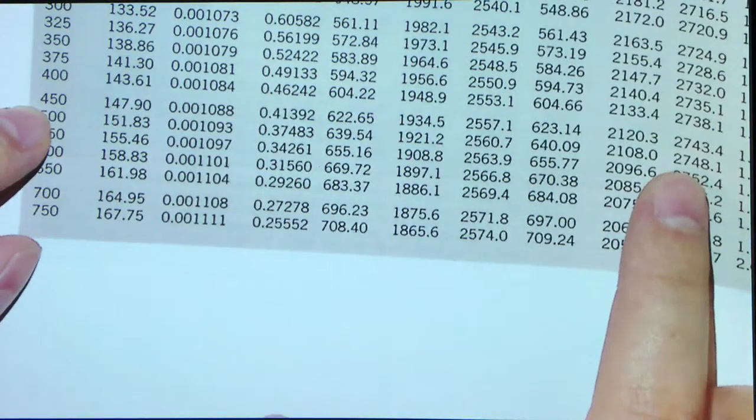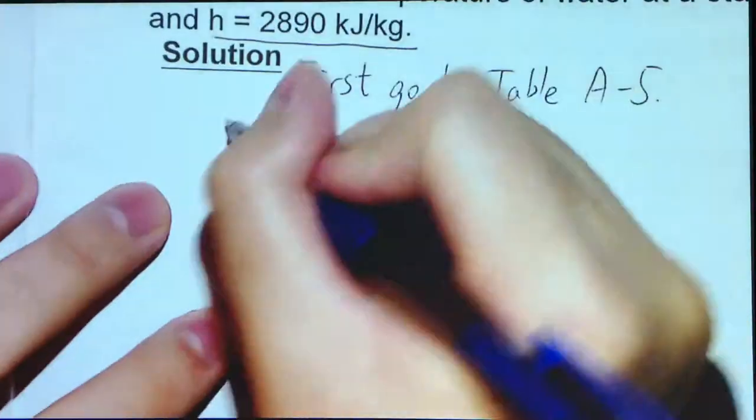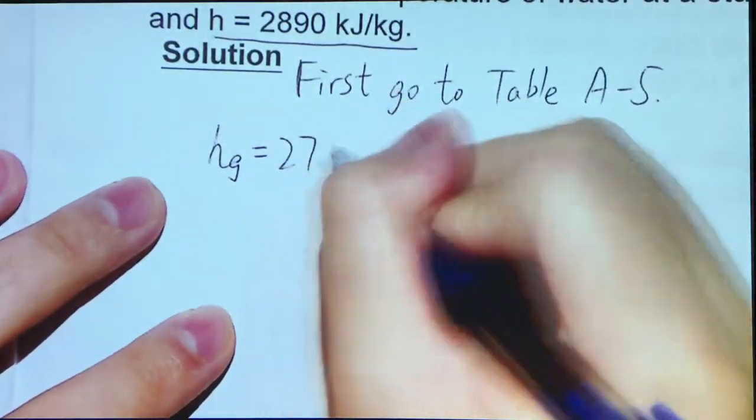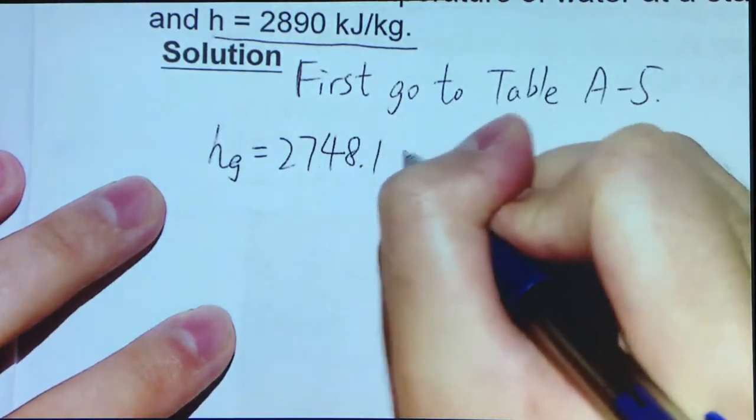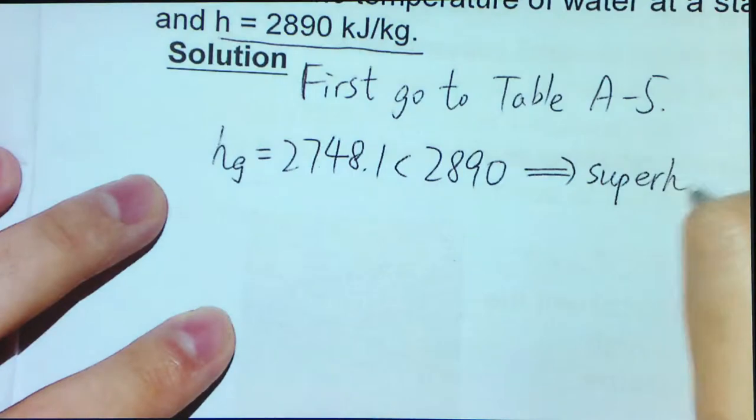So that means the hg is equal to 2748.1, which is less than 2890. It means that it should be superheated.